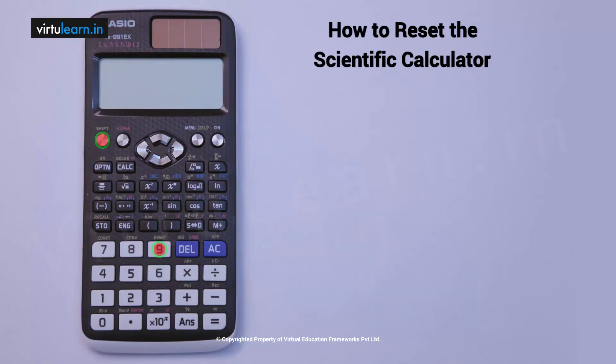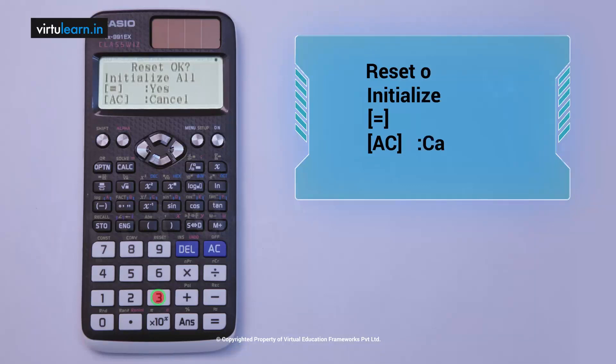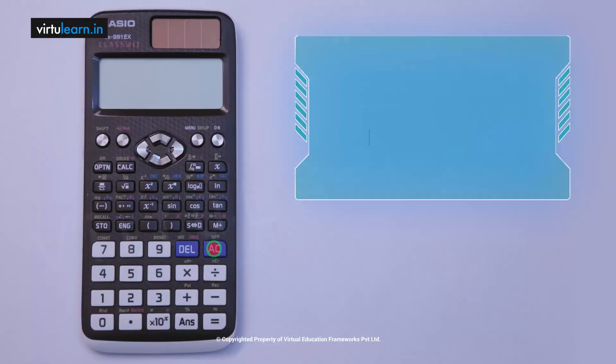Then I got three options here: the first one is setup data, second one is memory, initialize all. You have to choose the third option. Again, some options appear. You can press the equals button or AC button. I will press the equals symbol button here. For initialization, press the AC key. Like this, you have to reset the calculator.